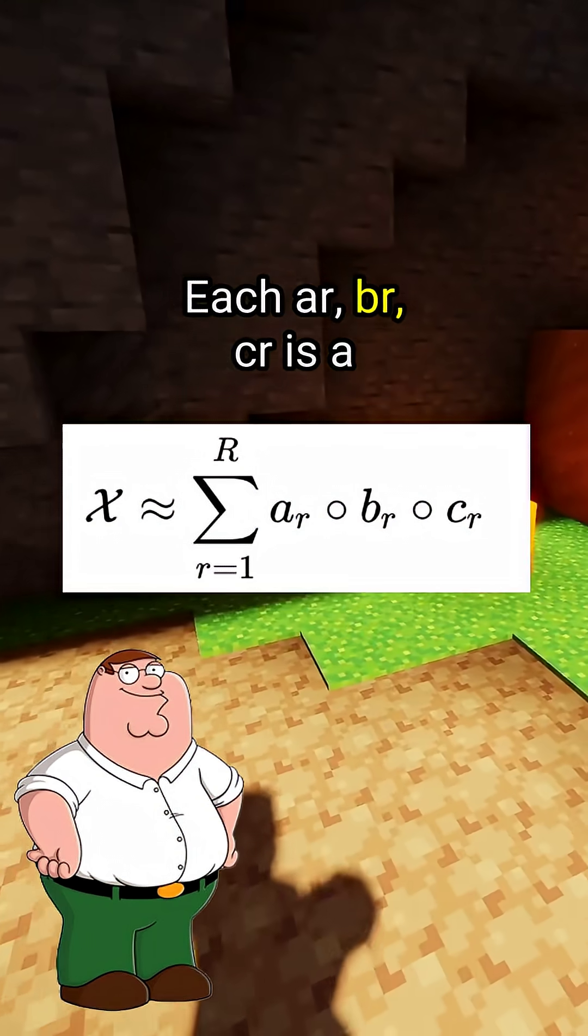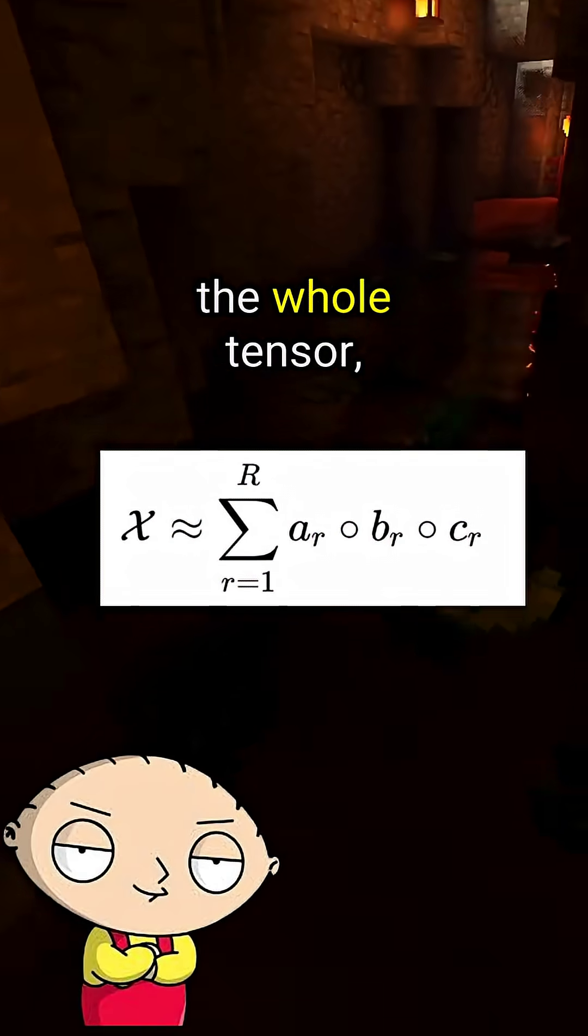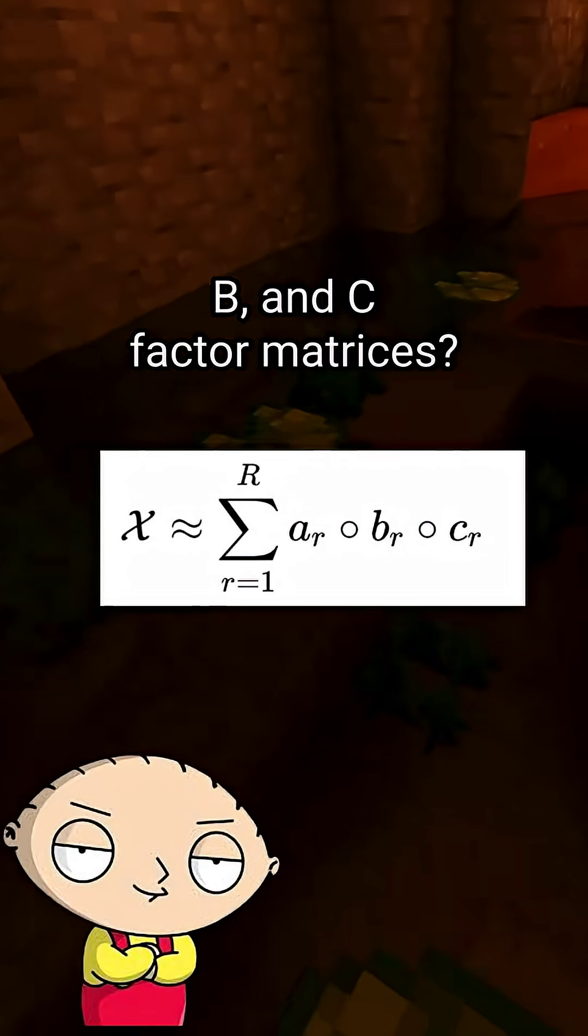Each a_r, b_r, c_r is a vector, and the circle operator means outer product. So instead of storing the whole tensor, we just keep the A, B, and C factor matrices?